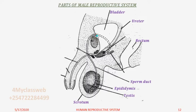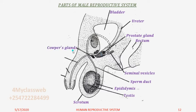Now from the sperm duct we have these two coils that attach to each sperm duct, because every testes has got its own sperm duct. These coils are called seminal vesicles. Below the seminal vesicles we have this organ here that we call the prostate gland. And below it we have the cowper's glands, just before the sperm leaves the sperm duct.